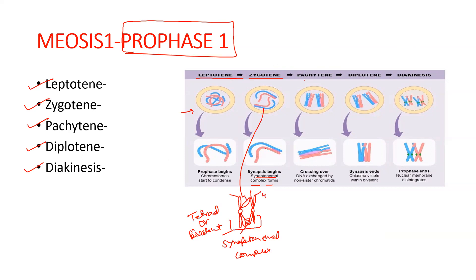After zygotene, in pachytene, crossing over takes place and DNA gets exchanged by non-sister chromatids. This crossing over takes place with the help of the recombinase enzyme. In diplotene, the synaptonemal complex dissolves, but the chromosomes remain attached at the places where crossing over occurred, forming X-like structures called chiasmata.